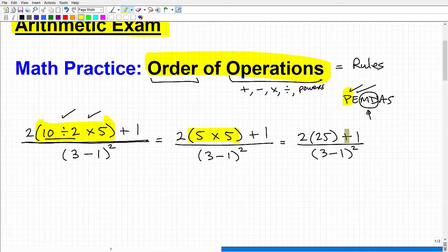So what am I going to do next? Well, I have addition here, and right here is what operation? The 2 outside of the 25 in parentheses is multiplication. So I have to do multiplication first before I do the addition. So this is going to be 2 times 25 is 50. And I'm just going to rewrite the rest of the problem: 50 plus 1 over 3 minus 1 over 2.